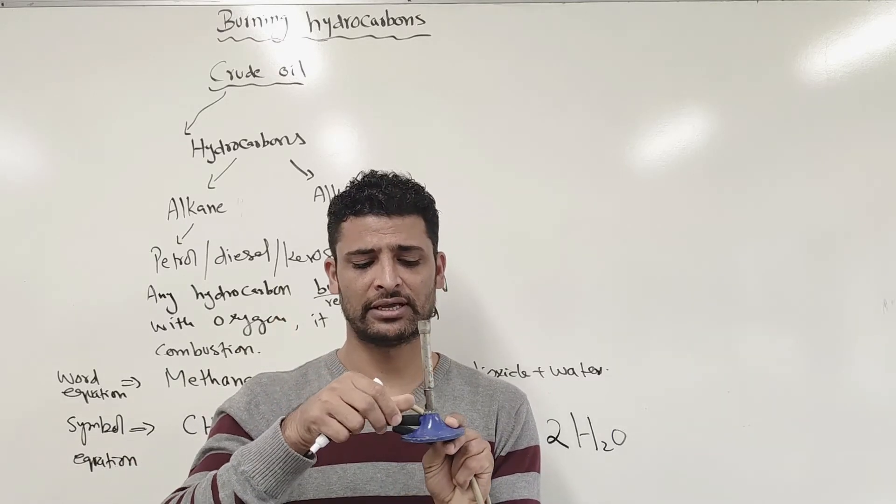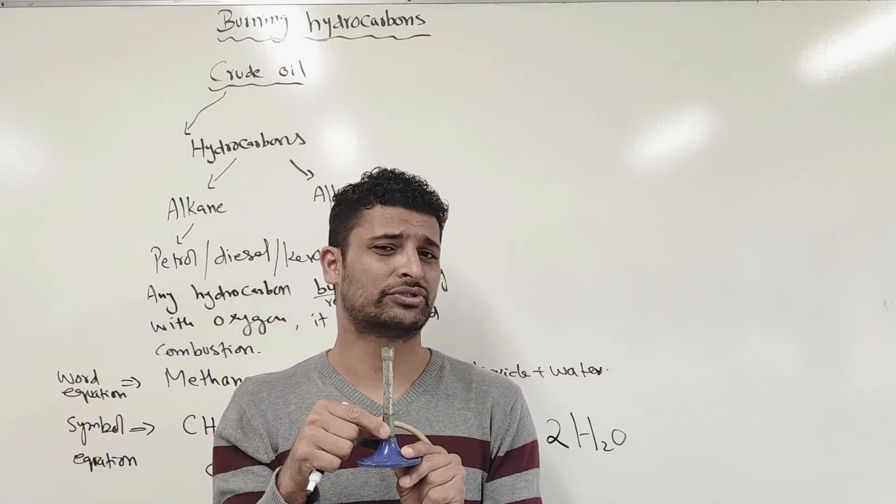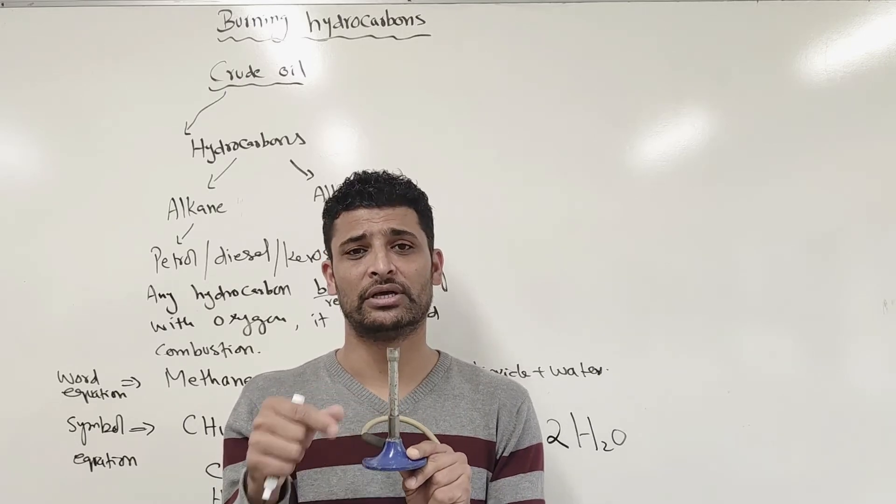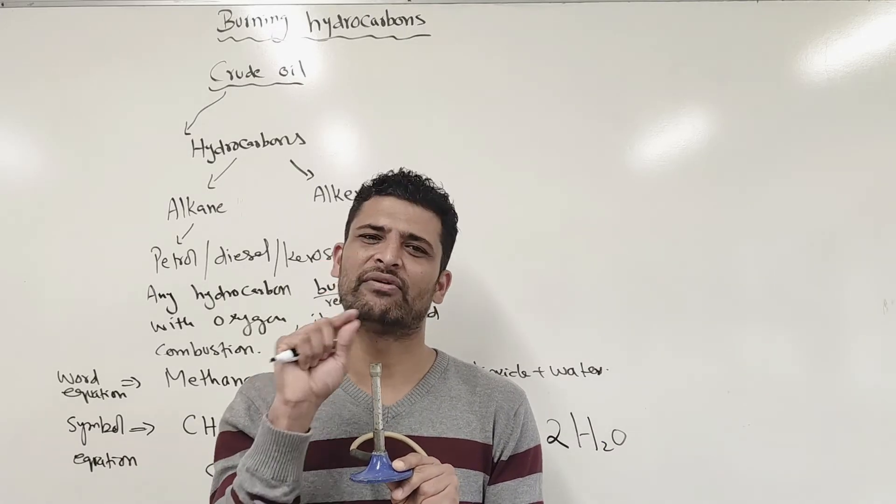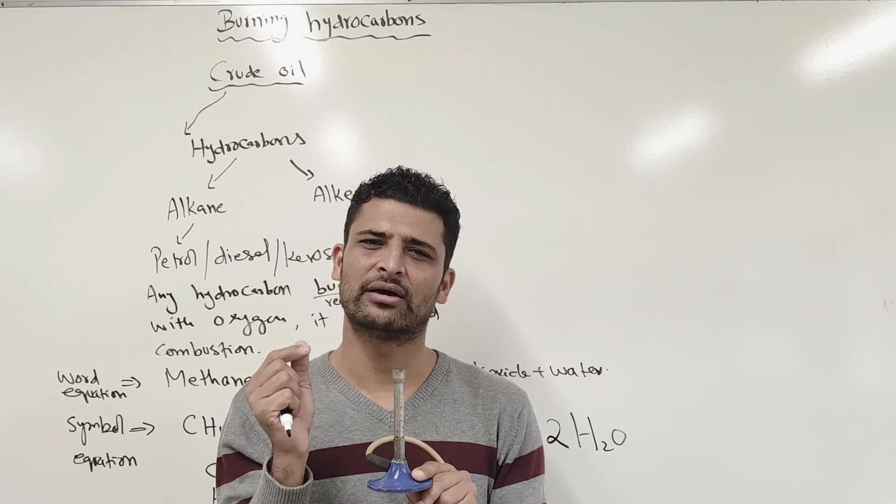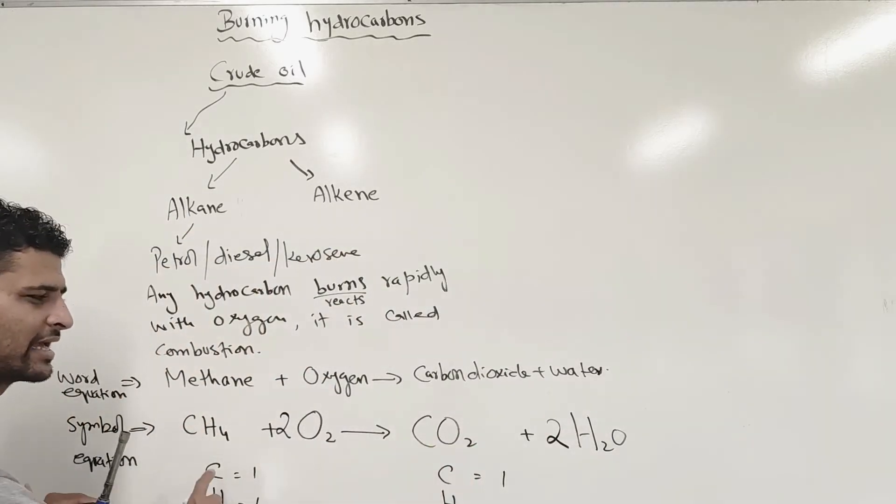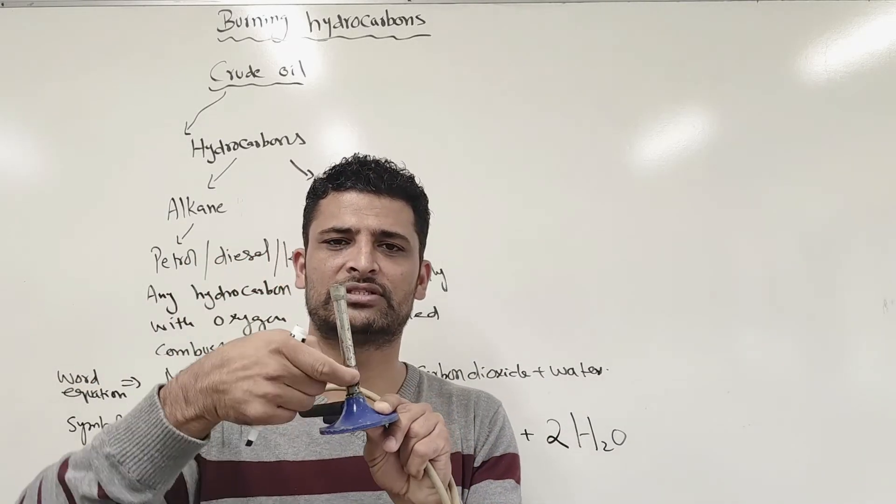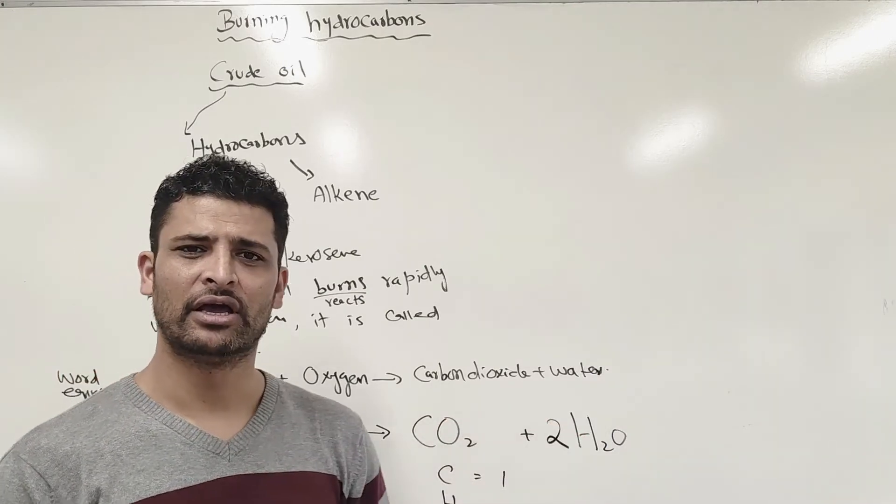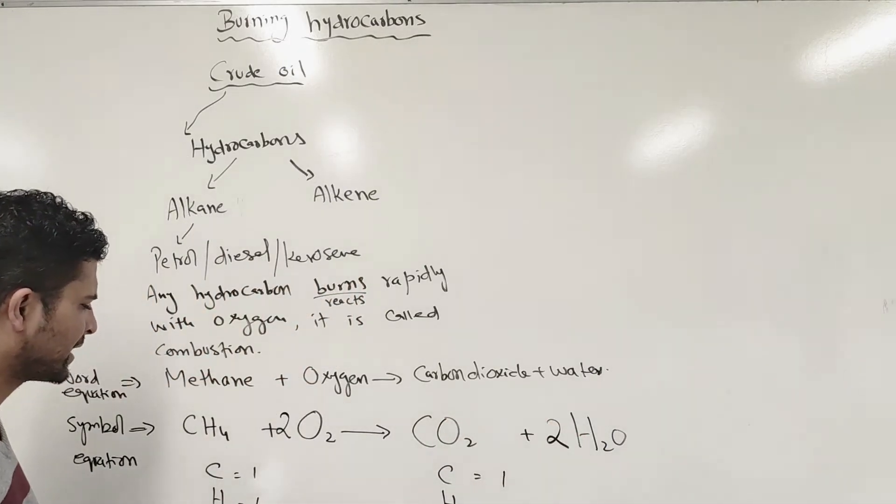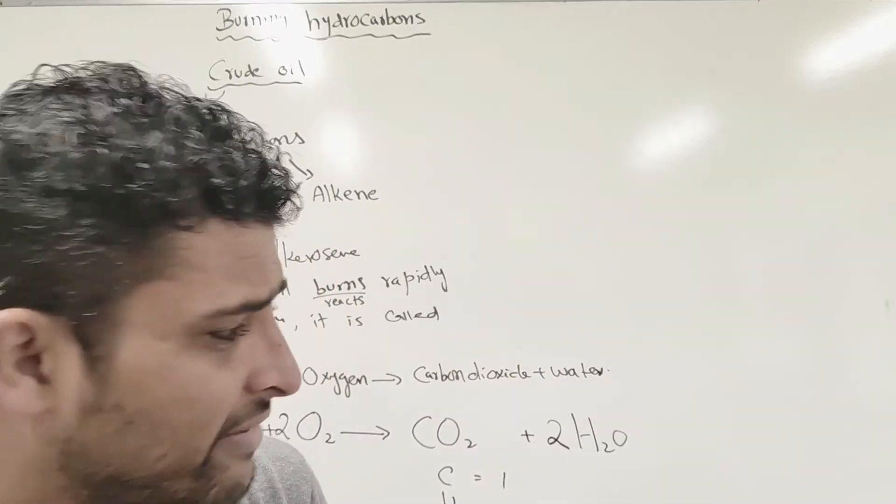But if I close it, if I close that gap, there won't be proper oxygen supply. At this point with limited oxygen, the flame will become yellow, like a candle one. So when you burn gas at home with good supply of oxygen - there's a gap or good supply in the room - it will give you carbon dioxide and water.